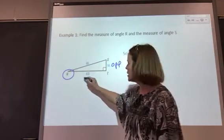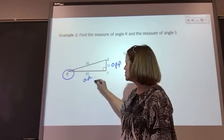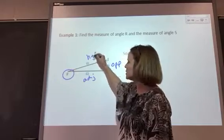16 would be our opposite leg, 63 is our adjacent leg, and 65 is the hypotenuse.